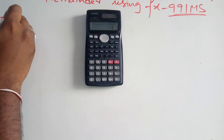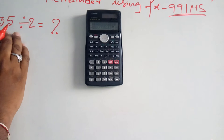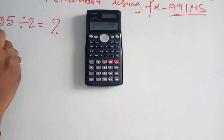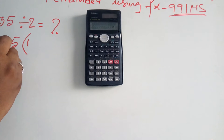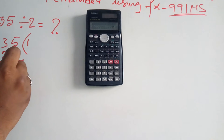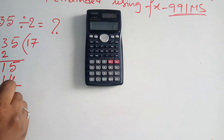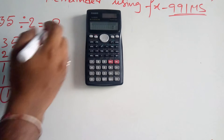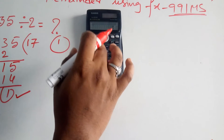Suppose I'm taking 35 divided by 2 — what is the remainder? Manually we calculate: 35 divided by 2 — two ones are two, one five, next two sevens are fourteen, remainder one. Fifteen minus fourteen, remainder one. So the remainder of 35 divided by 2 is 1.